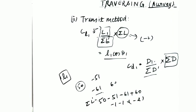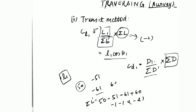That is all about Bowditch method, transit method, and traversing in general. There is nothing else related to traversing beyond this. We will solve a few examples in the next video so that you can understand each and every point taught in this lecture. Thank you.